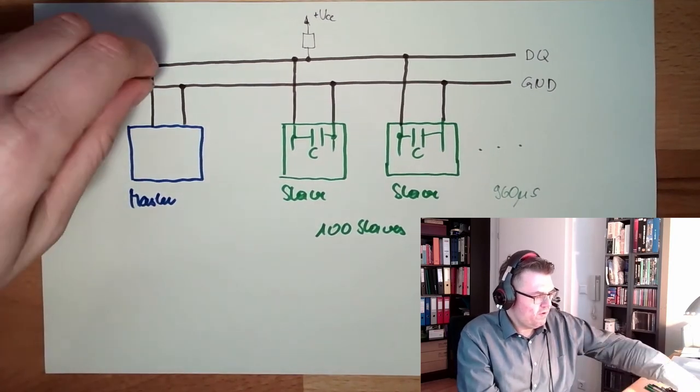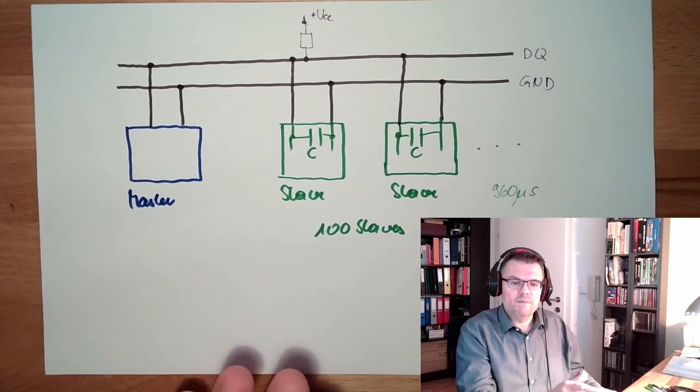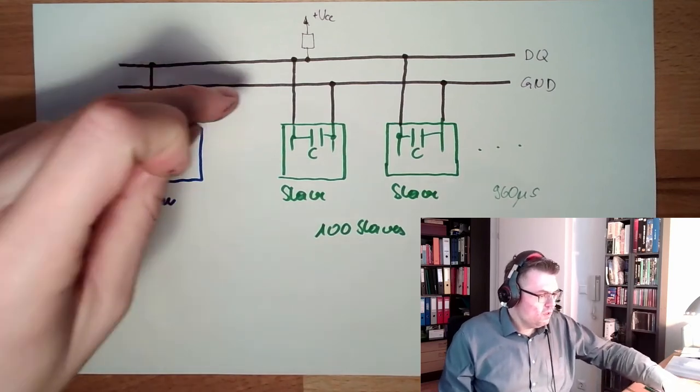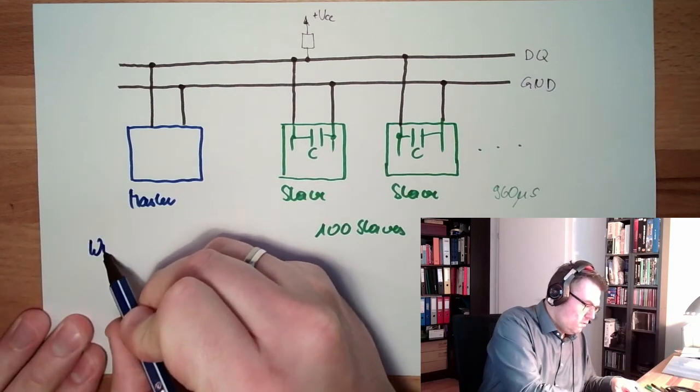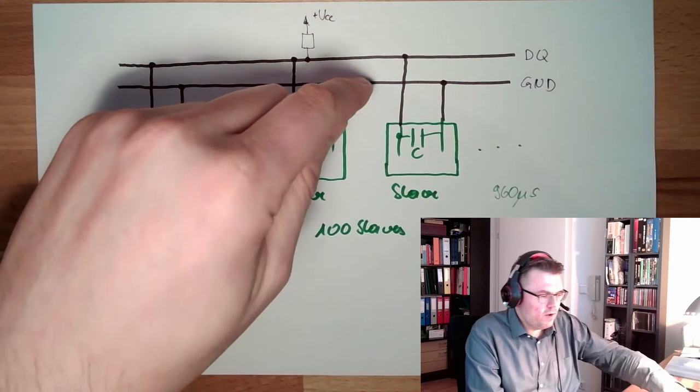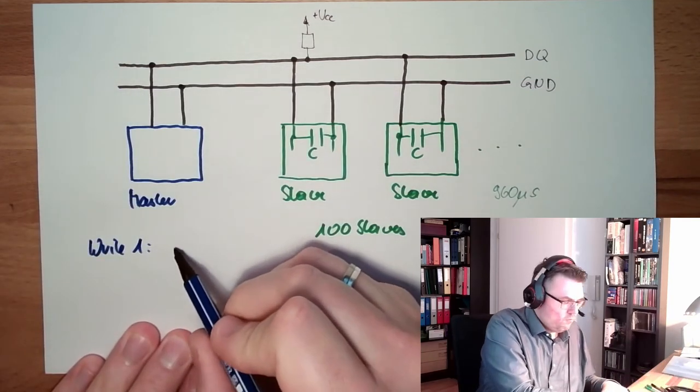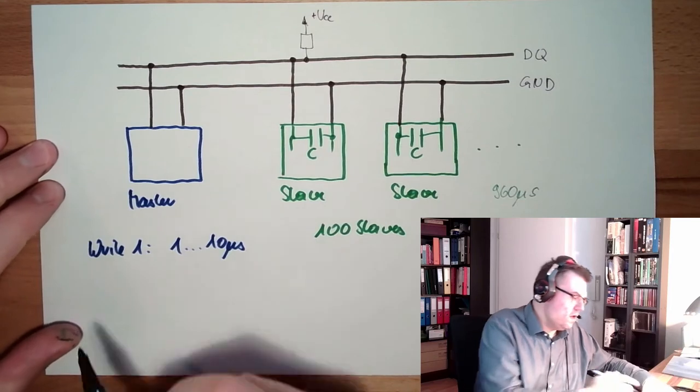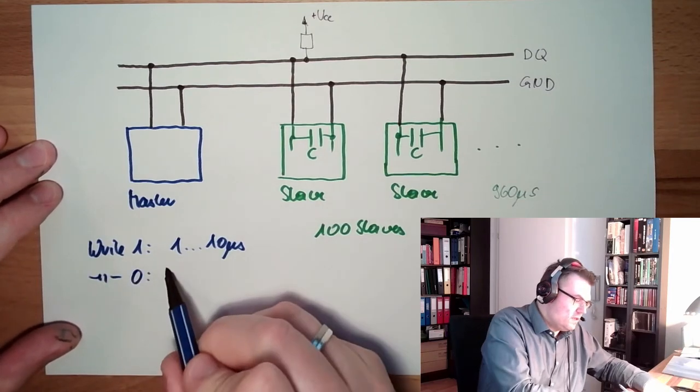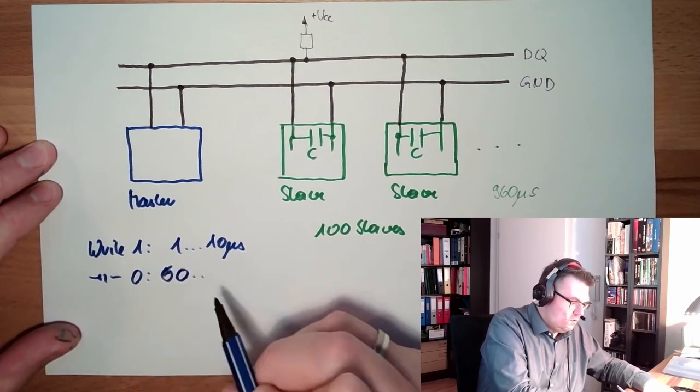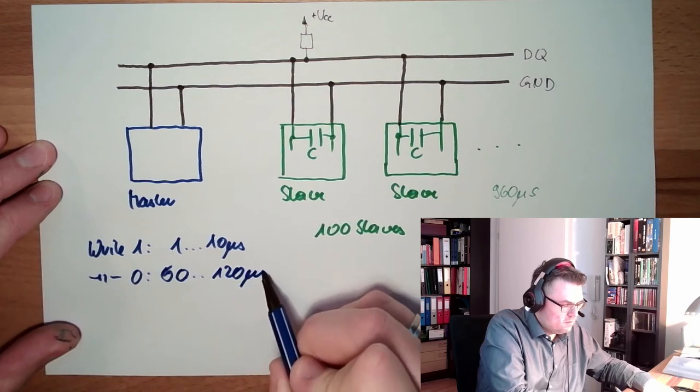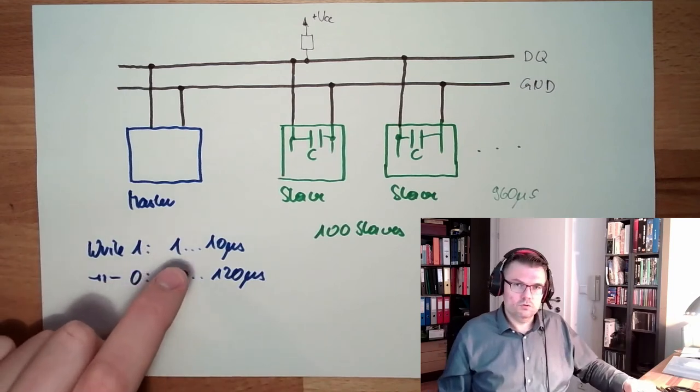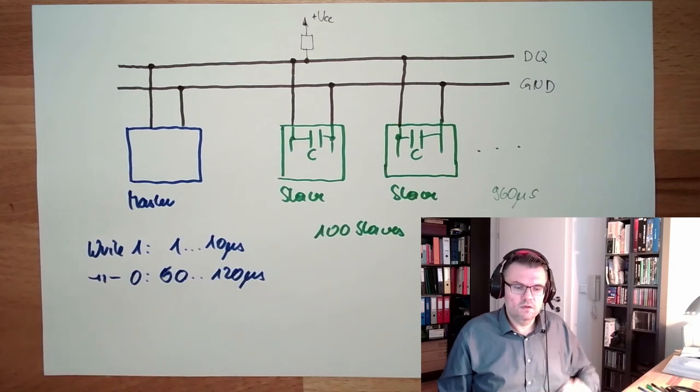And asynchronous, whenever the master is pulling this to zero, then the timing starts. And if the master, for instance, wants to write a one, it will pull the DQ line. Write one. The DQ line will be pulled to zero for one to 10 microseconds. So we pull down. If we want to write a zero, then we're pulling this down from 60 to 120 microseconds. And this is how it is done. Basically, it's a little bit like Morse code. Short is a one, long is a zero. And so we can transfer.